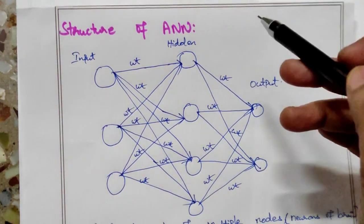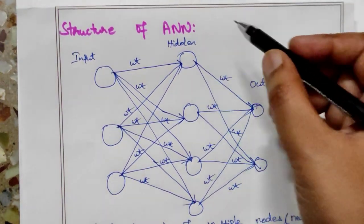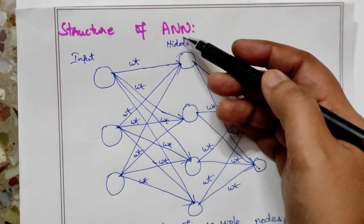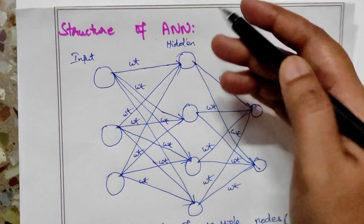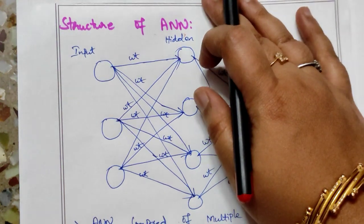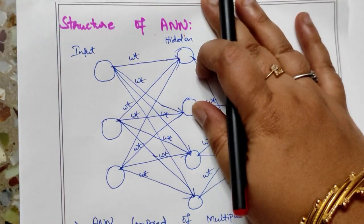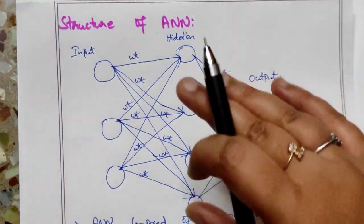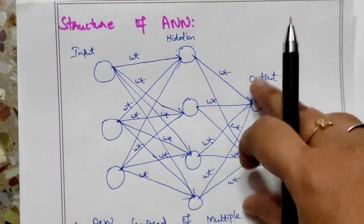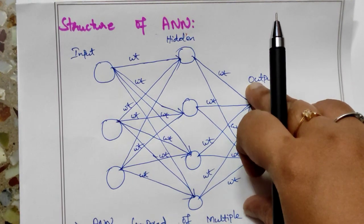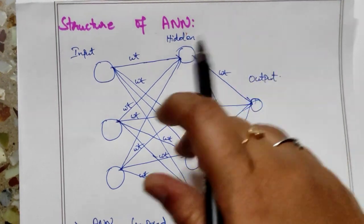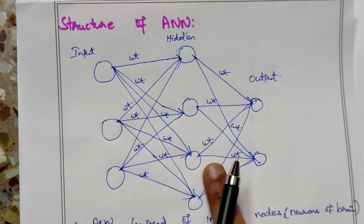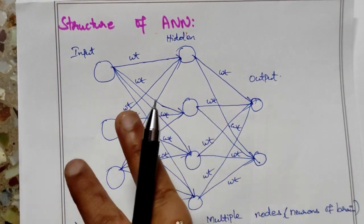Hello everyone. Today's topic is about the structure of artificial neural networks. Artificial neural network has a simple and basic structure. We will talk about the details of the structure of the artificial neural network.